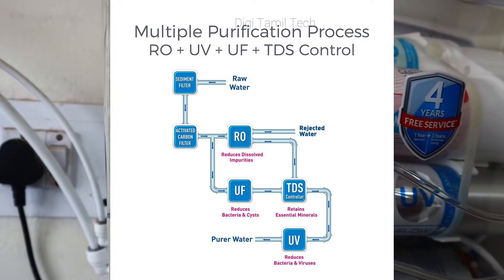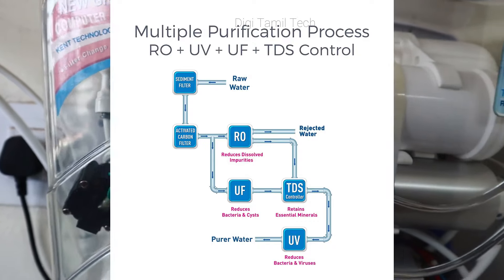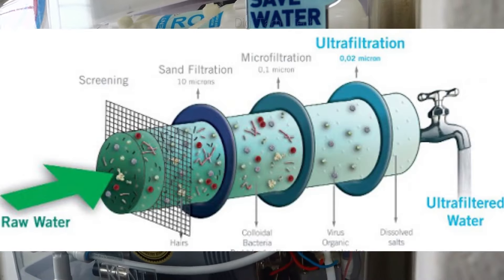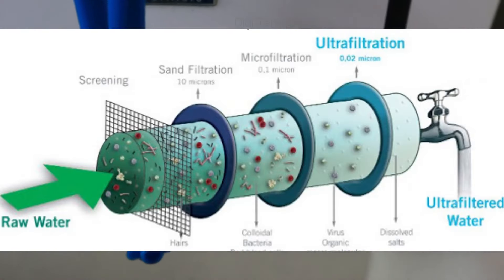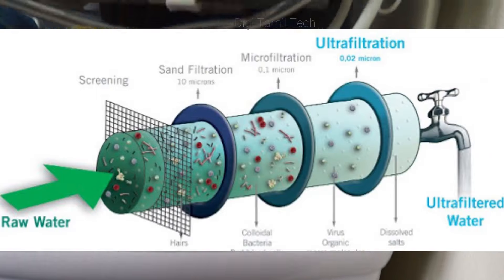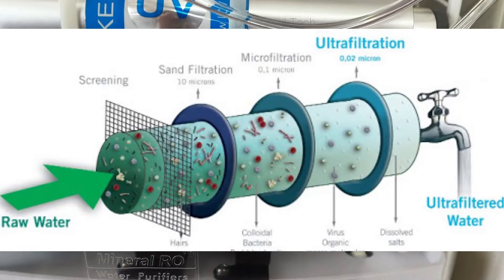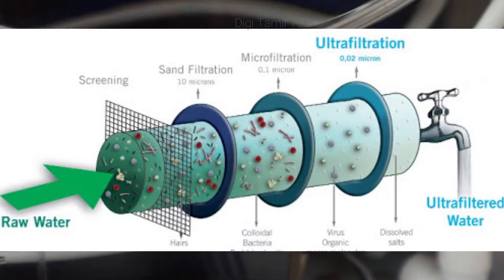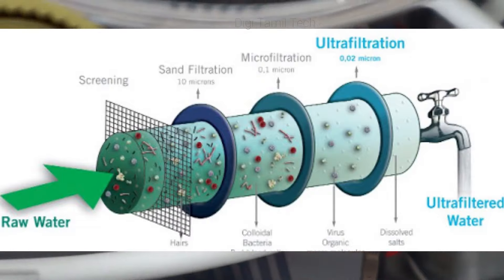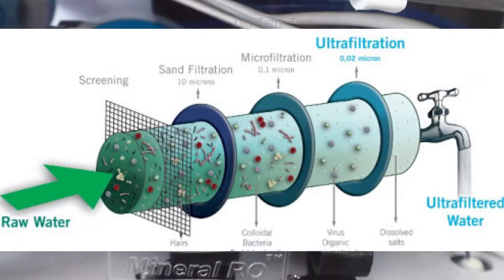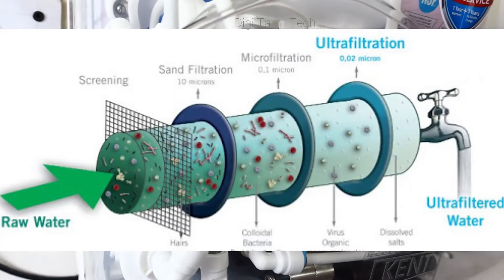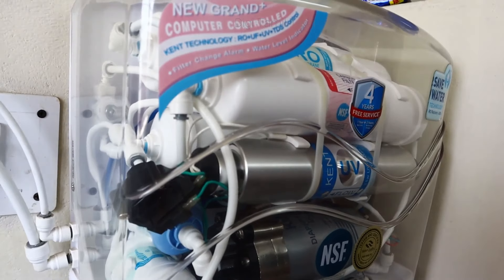UF means Ultrafiltration, which filters particles in the range of 0.01 to 1.0 microns. We will filter all the particles, including all bacteria and microorganisms. So here we have fresh water.